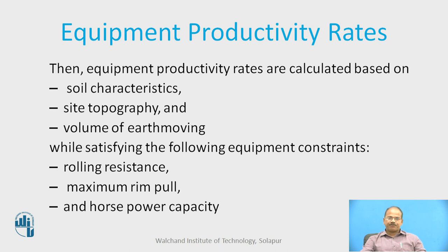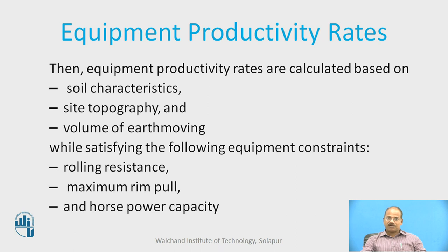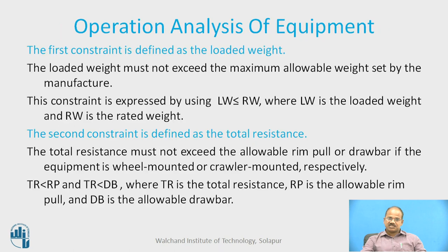Equipment productivity rates are calculated based on soil characteristics, site topography, and volume of earth moving, while satisfying equipment constraints such as rolling resistance, maximum rim pull, and horsepower capacities — all important when proceeding with productivity rate analysis.